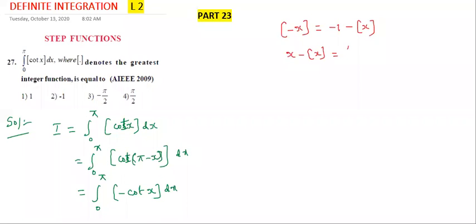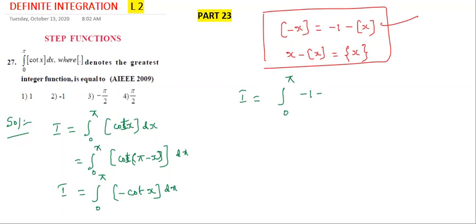That is floor x. These are the two properties. Now we need only the first one. So step of minus cot x, how to write now: 0 to pi minus 1 minus step of cot x. Are you understood by observing that property? This is equation 1, this is equation 2. Add 1 and 2.